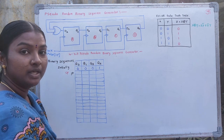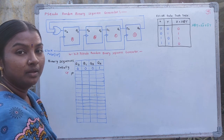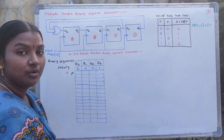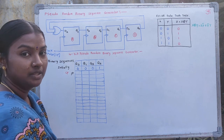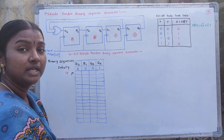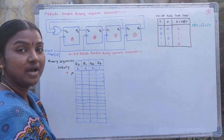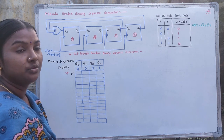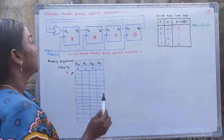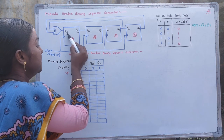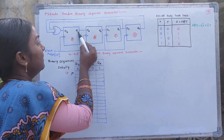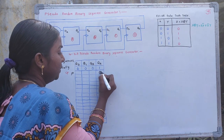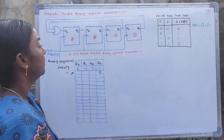We know the D flip-flop truth table: when the D input is 0, the output is 0; when the D input is 1, the output is 1. Using this truth table, DA equal to 0 means QA will be 0.